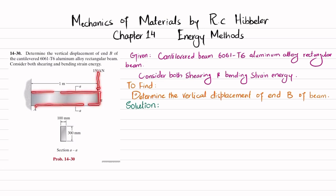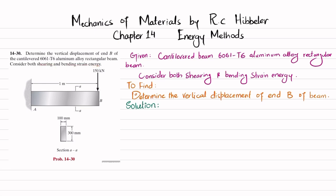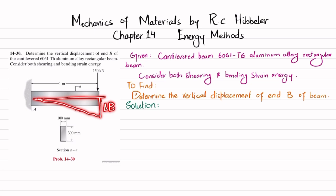This is a cantilever beam having a point load of 150 kilonewtons at end B. The cross-section is rectangular: height is 300 millimeters and width is 100 millimeters. You have to consider both shearing and bending strain energy and find the displacement of point B, which is delta B. Due to this load, the beam will bend, giving us delta B.